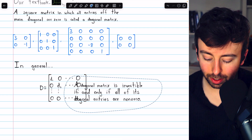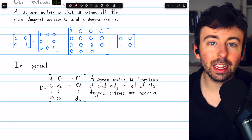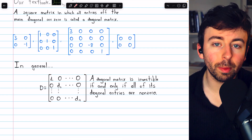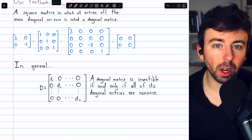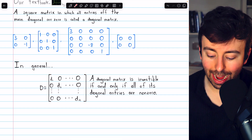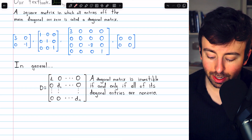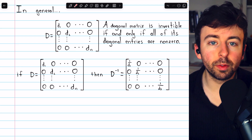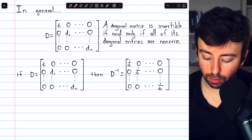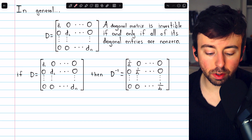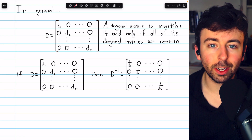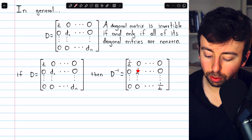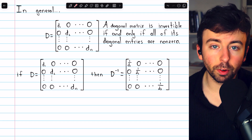One of the nice things about a diagonal matrix is that it's very easy to determine if it's invertible or not. A diagonal matrix can have a zero on its diagonal and still be a diagonal matrix. But if a diagonal matrix has no zeros on its diagonal, then it's invertible. A diagonal matrix is invertible if and only if all of its diagonal entries are non-zero, and the inverse is very easy to find. If D is our n by n invertible diagonal matrix, then D inverse consists of just the reciprocals of those non-zero main diagonal entries, with zeros everywhere not on the main diagonal.